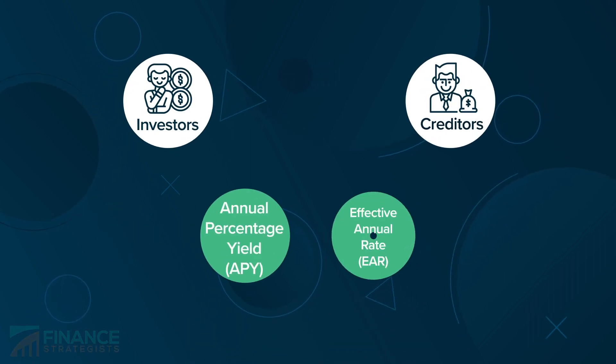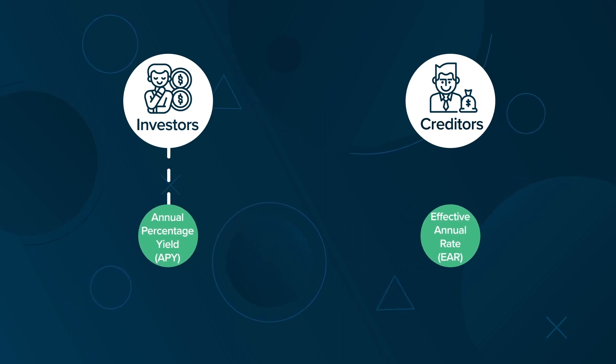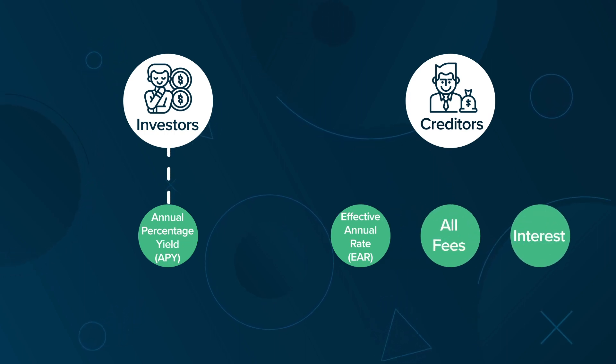APY is the same as the effective annual rate, or EAR, but APY is stated from the investor's perspective. The EAR computes the actual interest paid to a creditor after factoring all fees and interest compounding on smaller time frames.